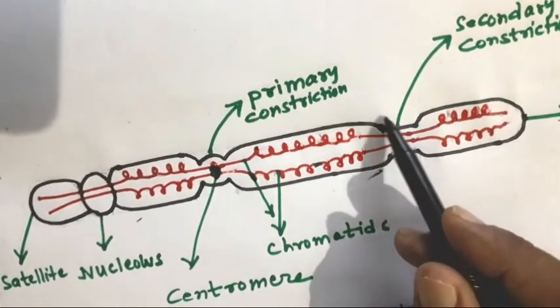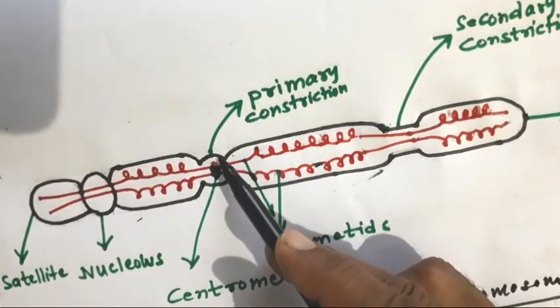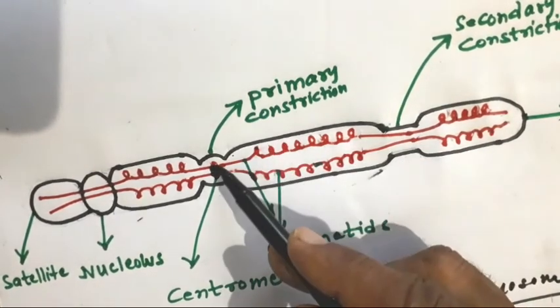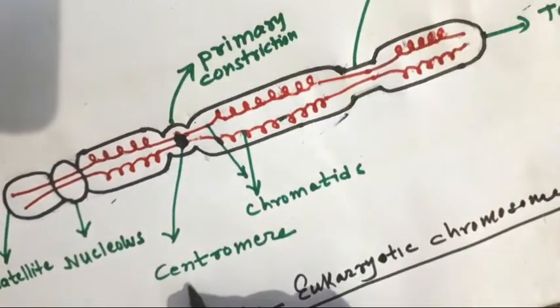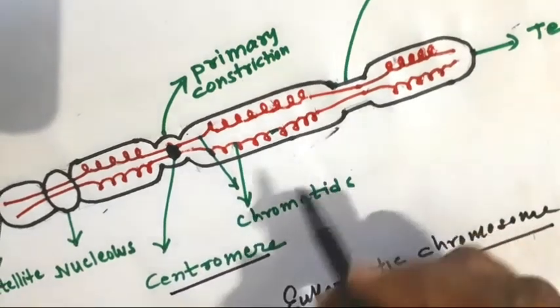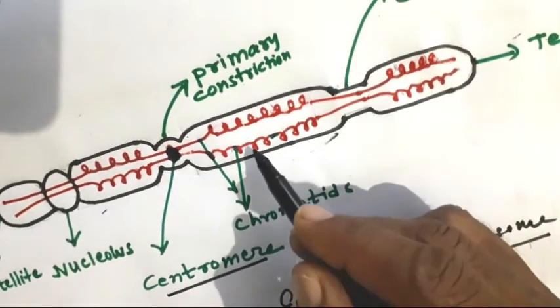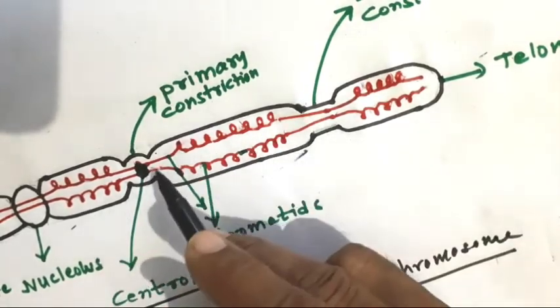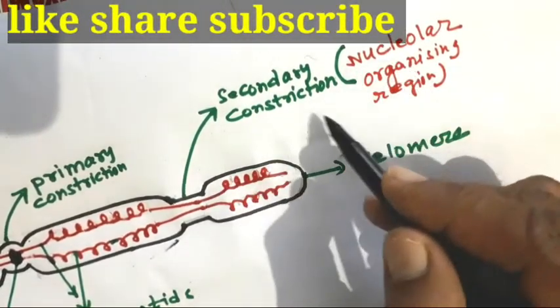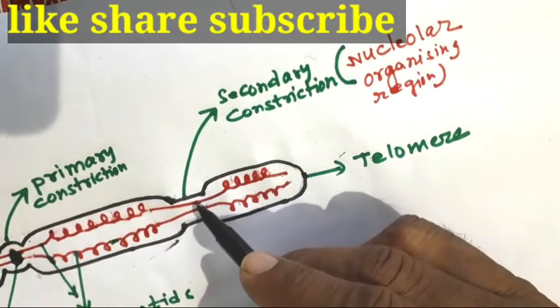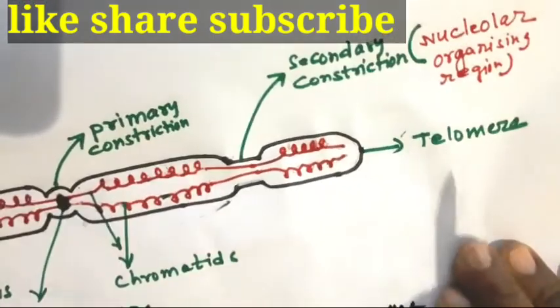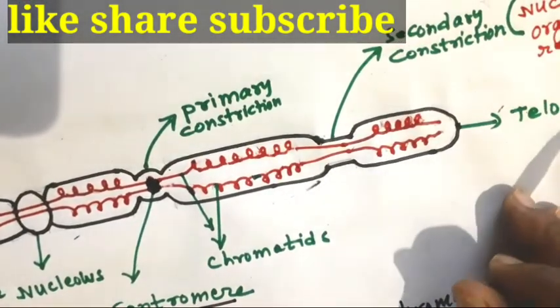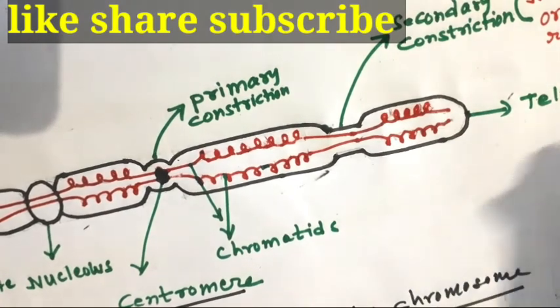The pellicle envelope is invaginated at two places — this is called the primary constriction and this is called the secondary constriction. In the primary constriction, the two chromatids are attached together — this is called the centromere, also called the kinetochore. In the secondary constriction, there is the site of formation of the nucleolus, so this is also called the nuclear organizing region. These are the telomeres — the last part. In this way you can draw and label any parts required in board exams.